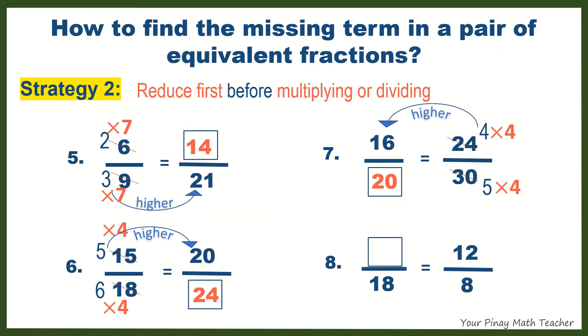Number 8: 12 and 8 can be reduced to lowest term by 4. 12 divided by 4 is 3. 8 divided by 4 is 2. 2 gets higher to 18. Therefore, we have to multiply 2 by 9. Do the same with 3, so we get our missing term, 27.